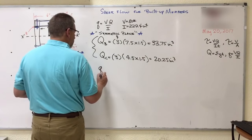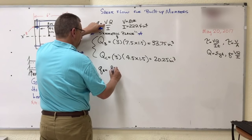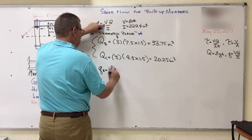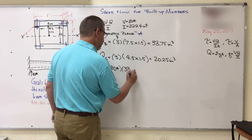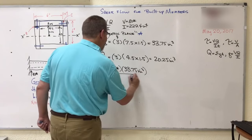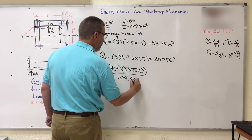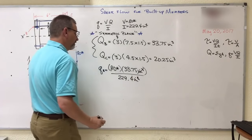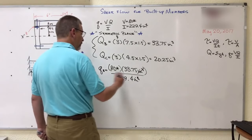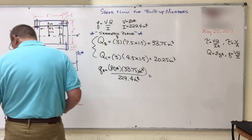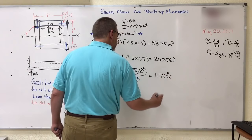So Q, let's say at point B, is going to be equal to VQ over I. So 80 pounds, whoa, 80, that's a zero after it, pounds, times Q, which is 33.75, divided by, let's see, I, 229.4 inches to the fourth. So all of those, we'll get rid of that. It's going to leave me with pounds per inch, right? Remember, shear flow is force per length. And so what do I have out of that? Let's see, that gives you what? That gives you 11.76 pounds per inch.